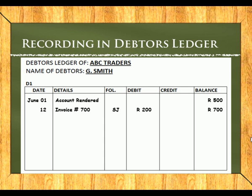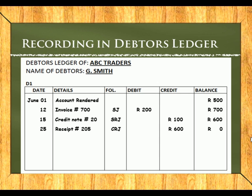When recording in subsidiary journals you must record transactions in date sequence. Items from the sales returns journal — credit notes — go to the credit side and reduce the balance. Money received from the debtor, from the cash receipts journal, goes to the credit side, noting the receipt number. Where a discount has been given, you first show the receipt — for example receipt 205 — with a credit of R550 leaving a balance of R50, then on the same day show receipt 205 again for the discount of R50, bringing the balance to zero.